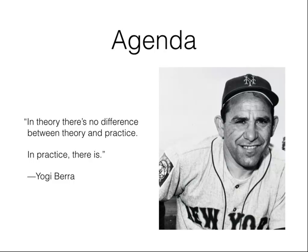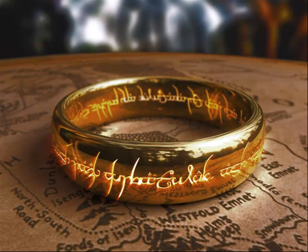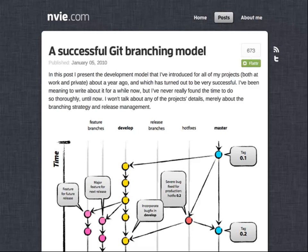I'll talk about the weaknesses of GitFlow and use that to propose a couple of different workflows you can use based on where you are in the stage of your project. I'll give some opinionated tips about general Git hygiene — keeping your Git clean. What I'm trying to avoid is the 'one ring' mentality: there's no one workflow to rule them all. Don't be dogmatic. Don't strive for theoretical purity.